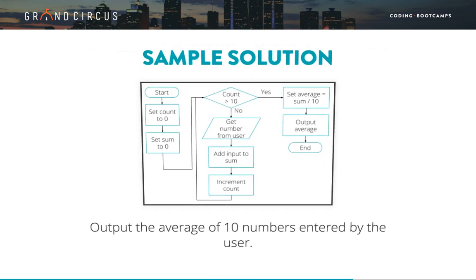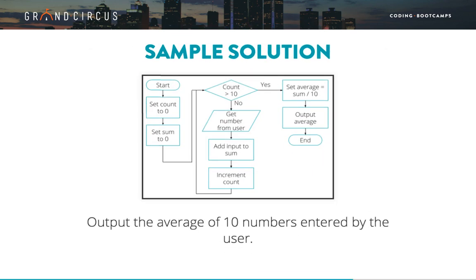Here is an example of a flowchart for the algorithm to average 10 numbers. There are multiple variations of flowchart diagrams that would also be correct. Compare yours to this one and see if you think yours is correct. Pause the video now to study the solution before we move on.